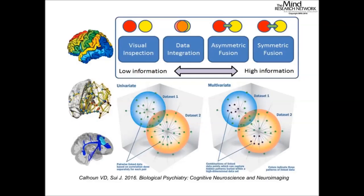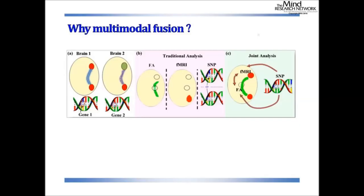When using the symmetric field, there are both univariate and multivariate methods. The simple univariate method is correlation, though you can set point correlations. Using multivariate approaches such as ICA or CCA-based methods, you can extract patterns that are robust to random noise and especially suitable for identifying complex patterns among high-dimensional data.